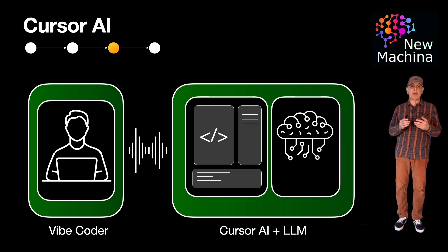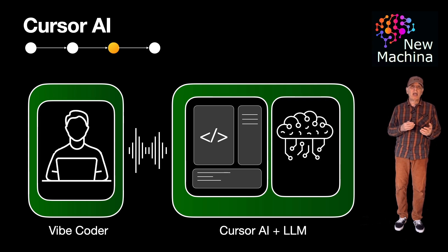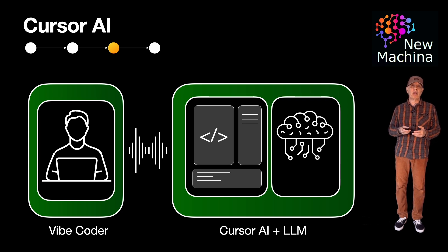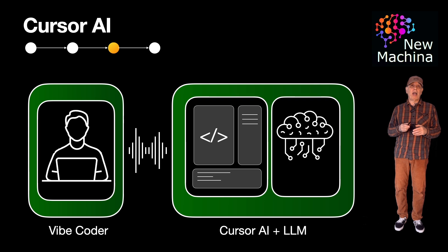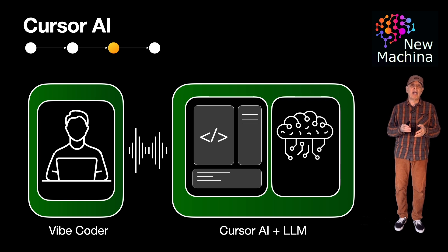Cursor AI enables Vibe Coding by turning the development experience into a fluid conversational workflow where you can interact with your code editor using natural language prompts. It understands your entire codebase semantically, allowing you to refactor, generate, or debug code without leaving the editor or losing focus. Cursor AI gives you a minimal, distraction-free UI built on VS Code but optimized for smooth conversational coding.